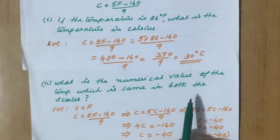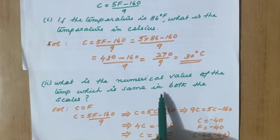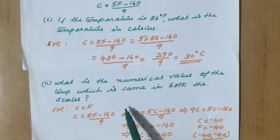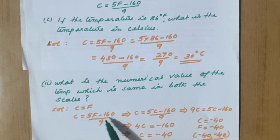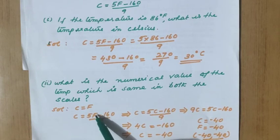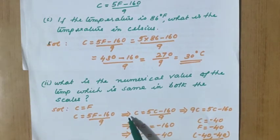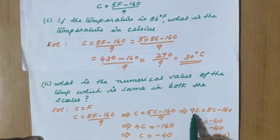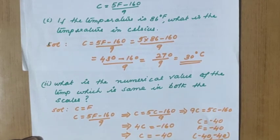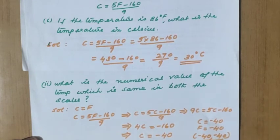The second sub-question: what is the numerical value of the temperature which is the same in both scales? Let C equal F. Substituting into C equals 5F minus 160 by 9: C equals 5C minus 160 by 9. Multiply by 9: 9C equals 5C minus 160. Solving: 4C equals minus 160, so C equals minus 40. Therefore F is also minus 40. The numerical value that is the same in both Fahrenheit and Celsius scales is minus 40.